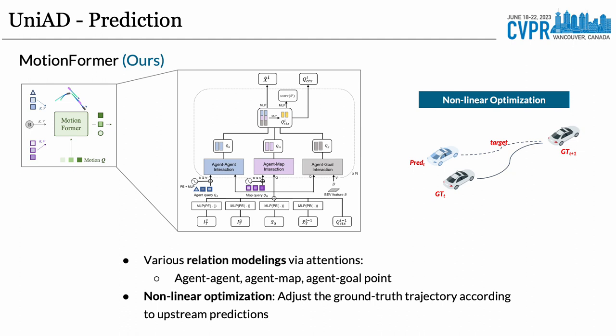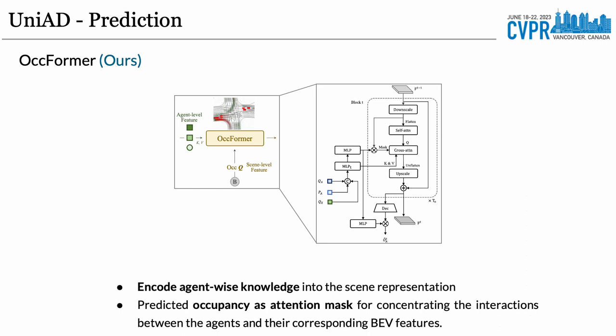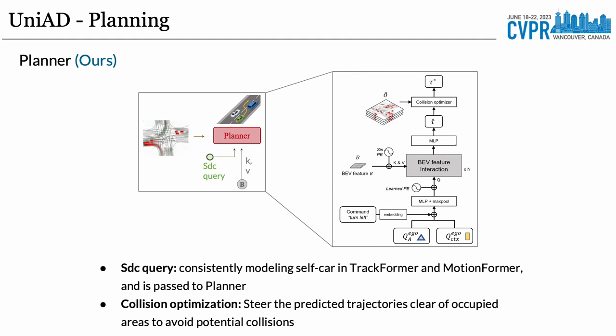The MotionFormer is designed to handle various relation modeling via attention mechanisms, which are agent-agent, agent-map, and agent-goal relations. Considering the upstream errors, we adopt a non-linear optimization to adjust the target motion trajectories. Unlike previous occupancy networks, the OccupancyFormer explicitly encodes agent-wise knowledge into future scene representation, preserving all agent identities. Furthermore, we devise an occupancy attention mask to concentrate the interactions between agents and their corresponding bird's-eye view features.